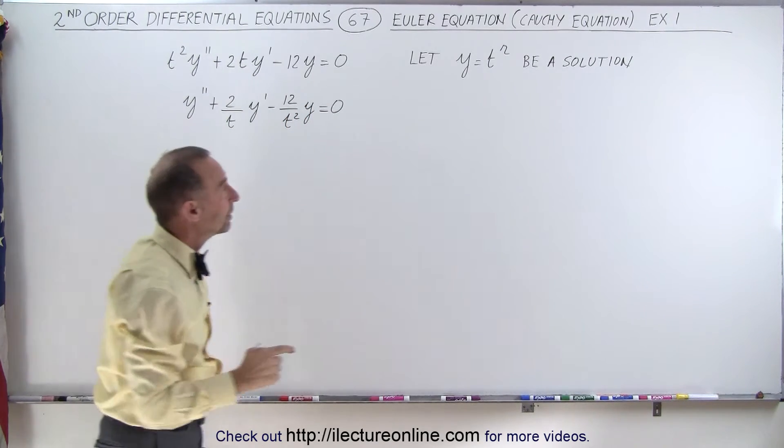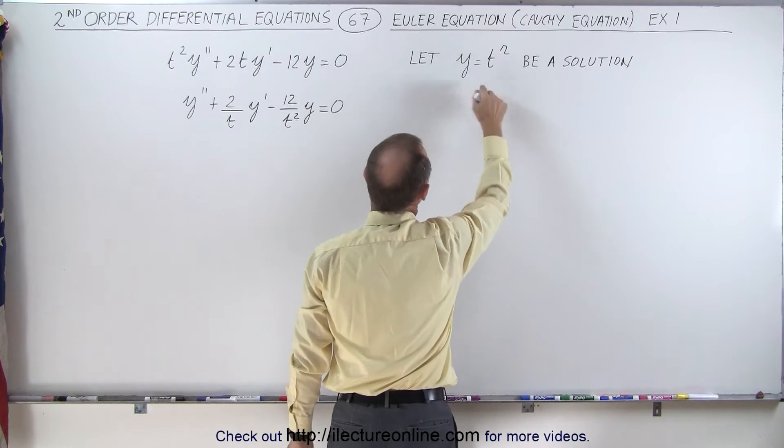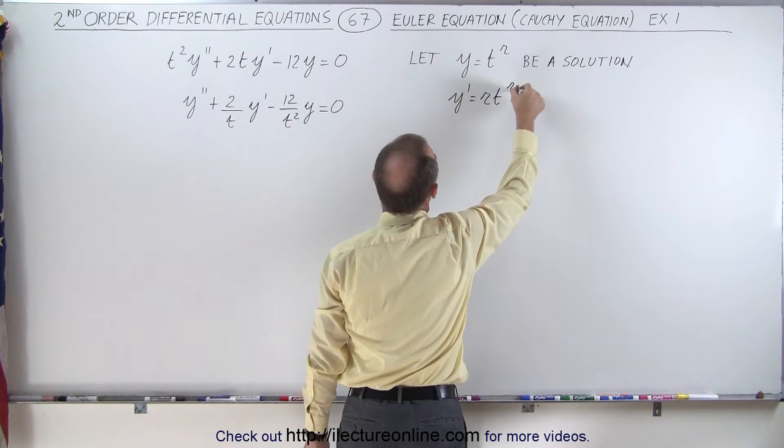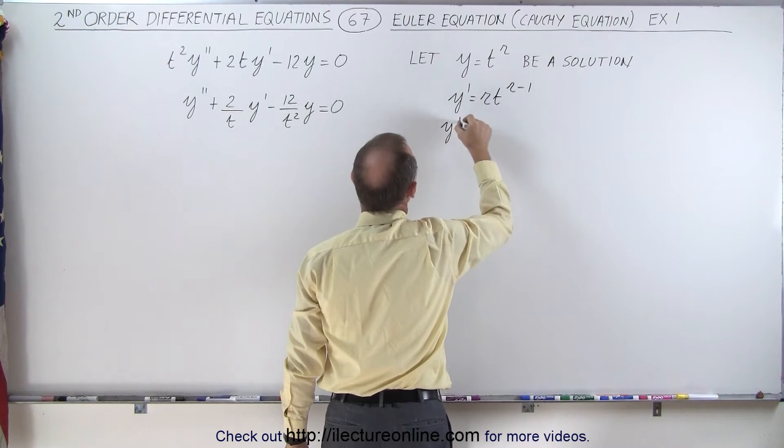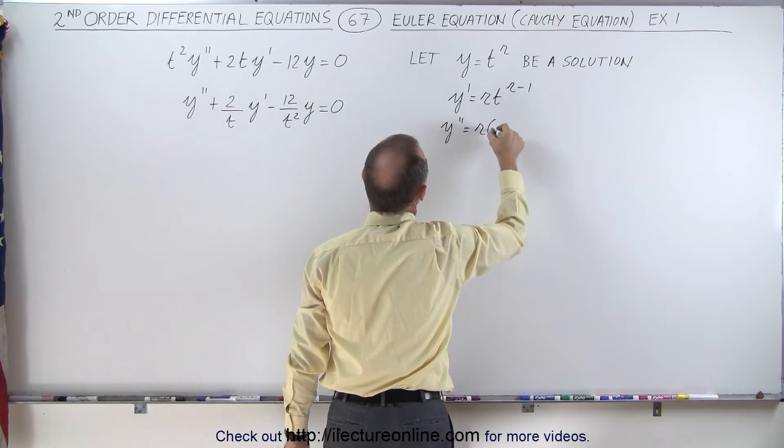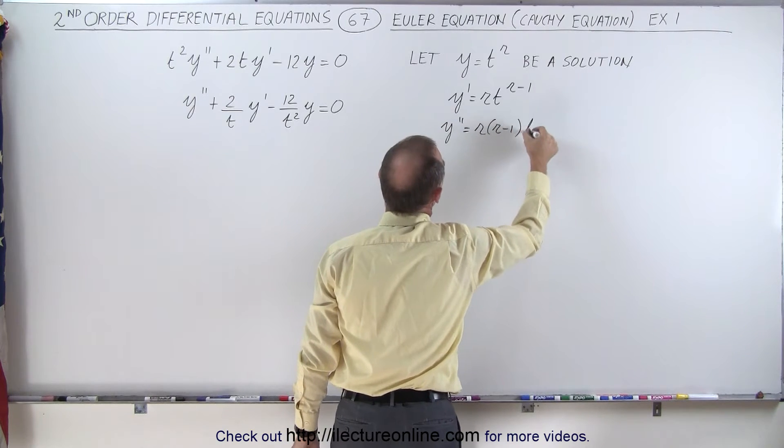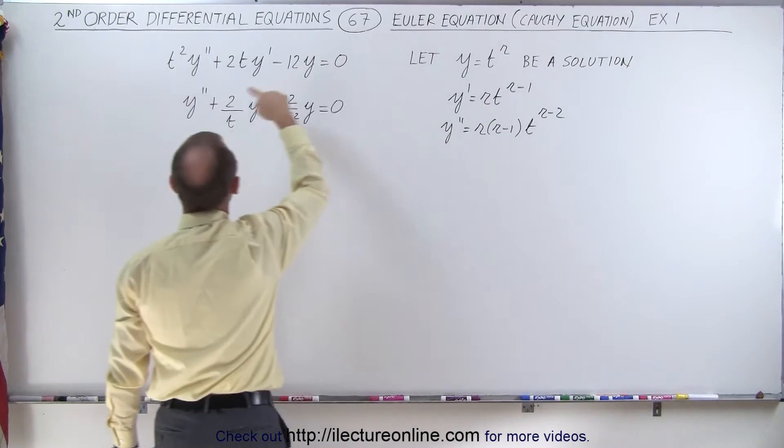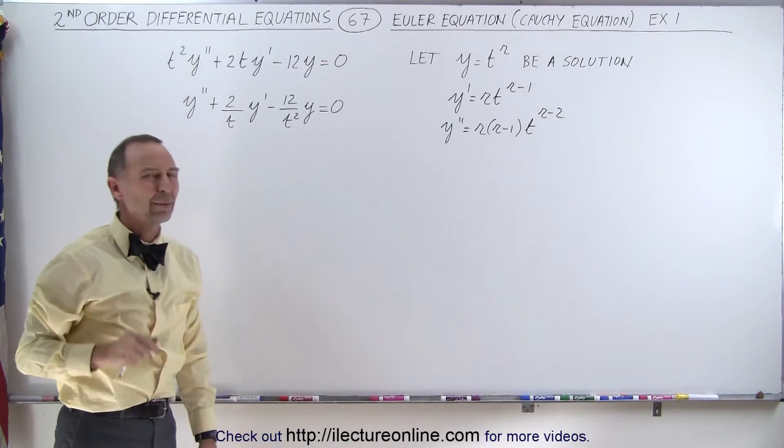Knowing that the general solution will look like this, we know that y prime will be equal to r times t to the r minus 1, and y double prime will be r times (r-1) times t to the r minus 2. If we then take these and substitute those into this equation, let's see what we get.